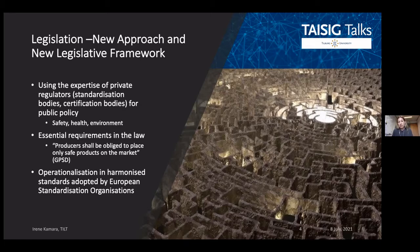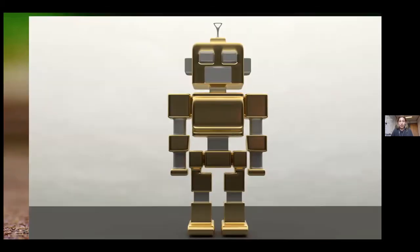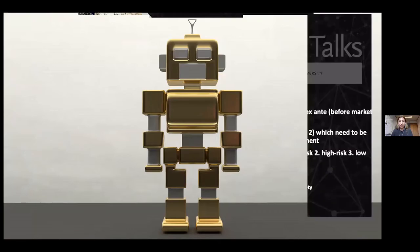In practice, the law provides only what are called the 'essential requirements' — the law says a product needs to be safe before being placed in the market, and then technical standards organizations and conformity assessment bodies work together with the Commission and other public regulators to develop the standards that specify what it means, for example, for a toy to be safe for a child of zero to two years old. So what does toy safety have to do with artificial intelligence?